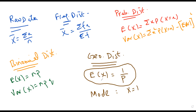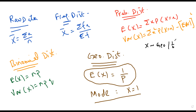Just rote memorize the formula for the expected value — the expected number of trials when the success happens for the first time. The mode is always x equals 1. Mode is basically the value with the greatest frequency. For a geometric distribution, let's say getting a six: the probability of getting a six on the very first trial is 1/6.